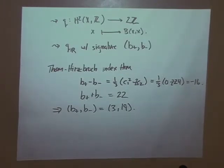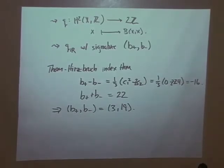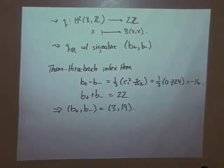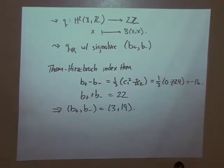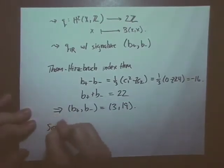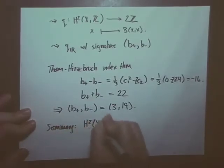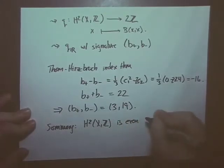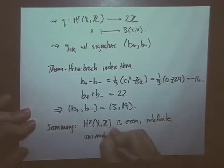In summary so far, H2(X, Z) has this lattice structure: it's even, indefinite, unimodular (which follows from Poincaré duality), and of signature (3, 19). Opening Serre's 'Course in Arithmetic,' chapter 5, you see that this actually tells you what the lattice is up to isomorphism — a theorem usually attributed to Milner. So H2(X, Z) is three copies of the hyperbolic plane U plus two copies of the negative-definite E8 lattice, written U³ ⊕ E8(−1)². This is going to be extremely important when we try to study the Brauer group of a K3 surface in lectures three and four.